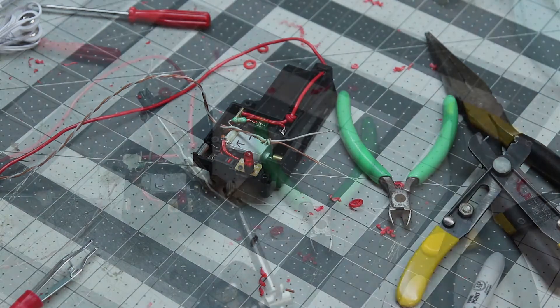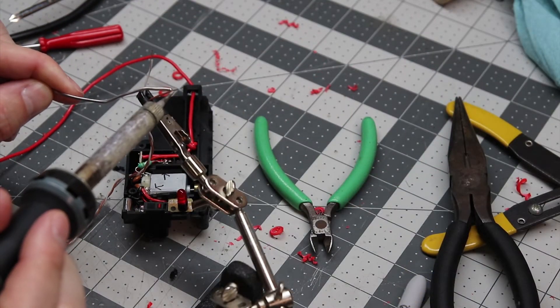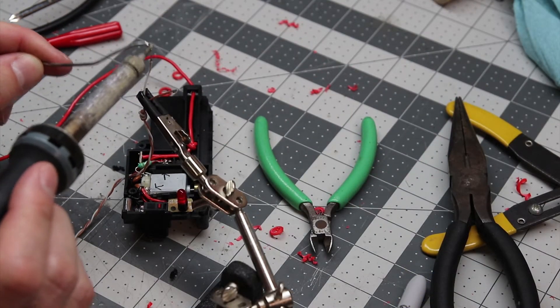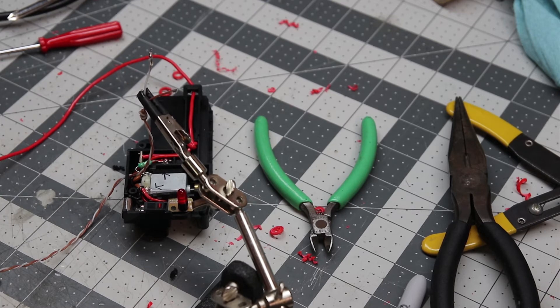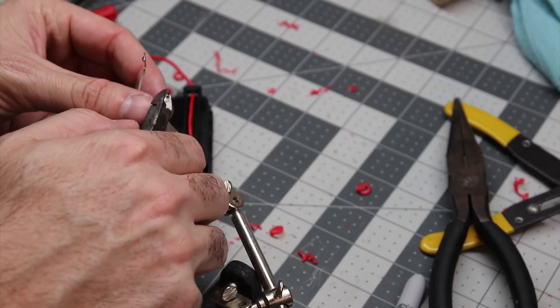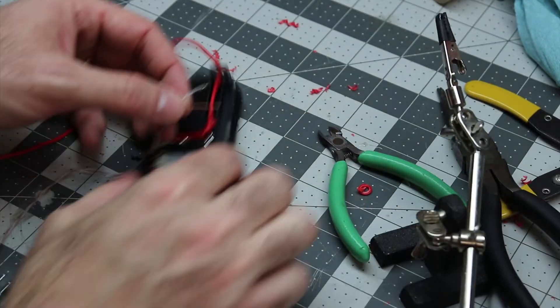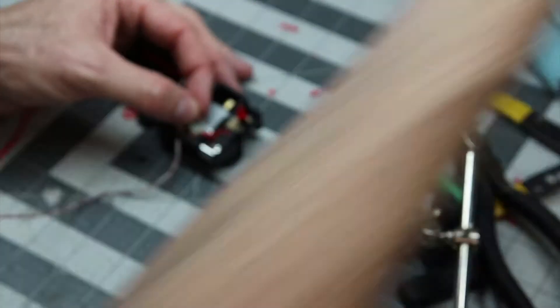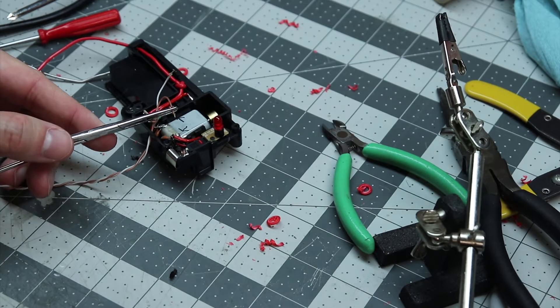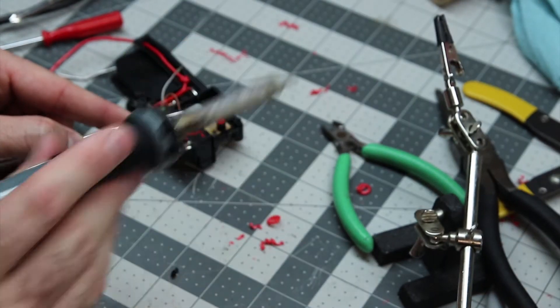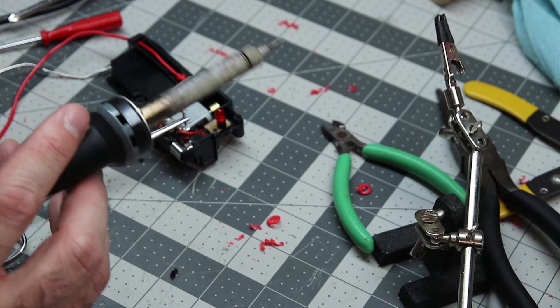Whenever I'm gonna solder stuff together like this, a lot of times I'll do what you just saw right there, which is tin the wires. That's just put a little solder on ahead of time, and then I'm gonna connect them to the points and hit them with the iron. Here I'm using some forceps. Man, if you guys do soldering and you don't have forceps, you should really get you a set.